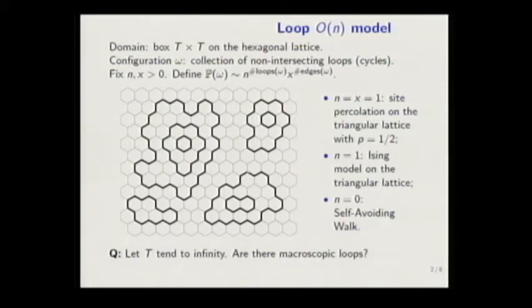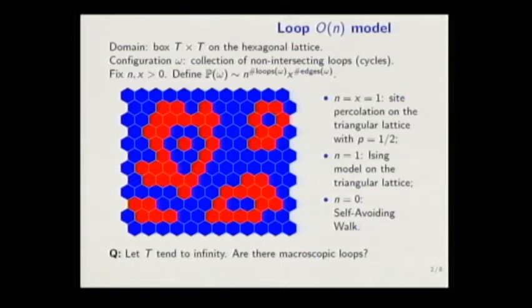It's just a uniform measure on all possible configurations. And what is a configuration? Well, there's a bijection between all loop configurations and all colorings, faces of the lattice in two colors. So like this, which loop will separate sides of different color.